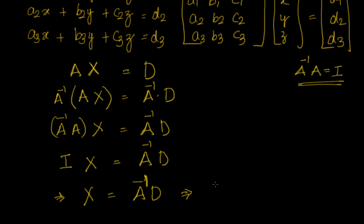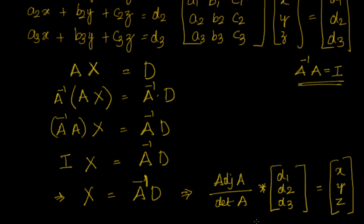What's the meaning of that? This is nothing but X equal to find out the adjoint matrix divided by determinant of the matrix and multiply it with D1, D2, D3. So if you are able to do that, that will give you - this is nothing but equal to your X, Y, Z values. If you are able to find out adjoint of A by determinant of A into D1, D2, D3, that will give you a 3 by 1 matrix, 3 rows and 1 column.